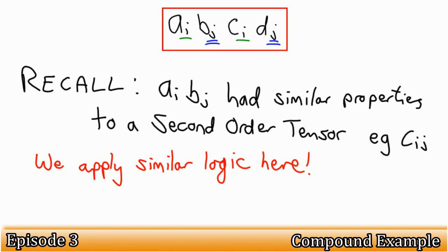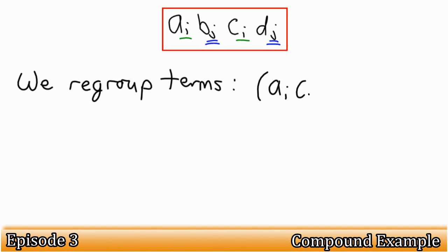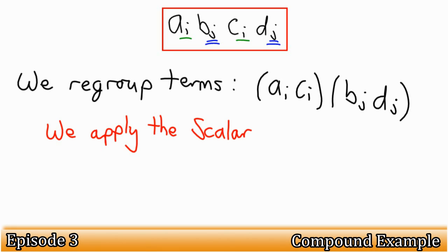If we regroup the term to look like this, a first bracket with Ai Ci, and then Bj Dj, and we can apply the dot product twice, as follows.